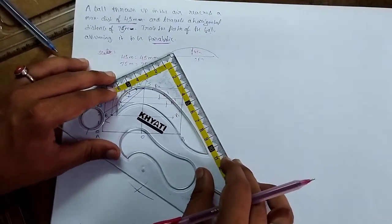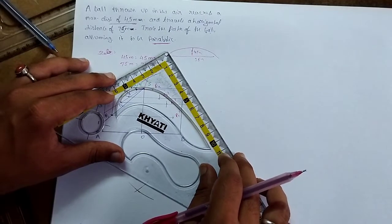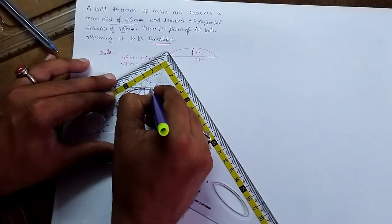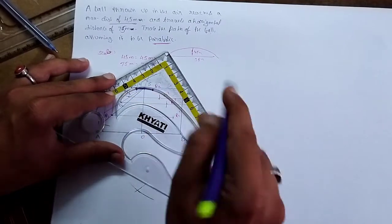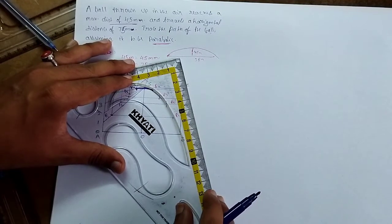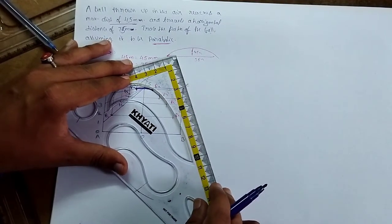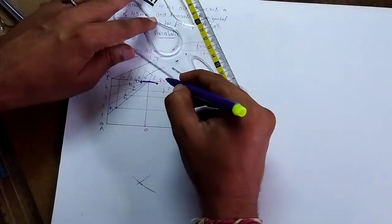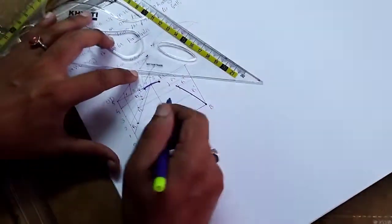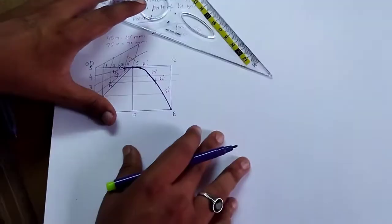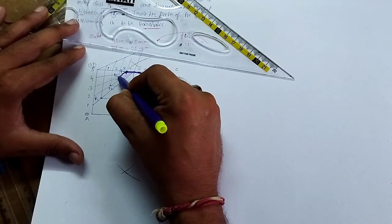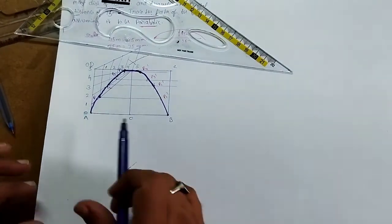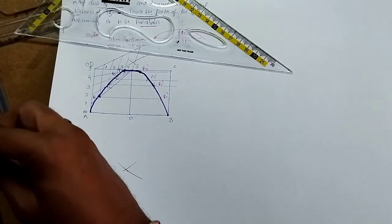Now join all these points. I'll take the help of this french curve. Start with P4 at the highest point, then P3, P2, P1. Continue smoothly to form the parabola curve on both sides.